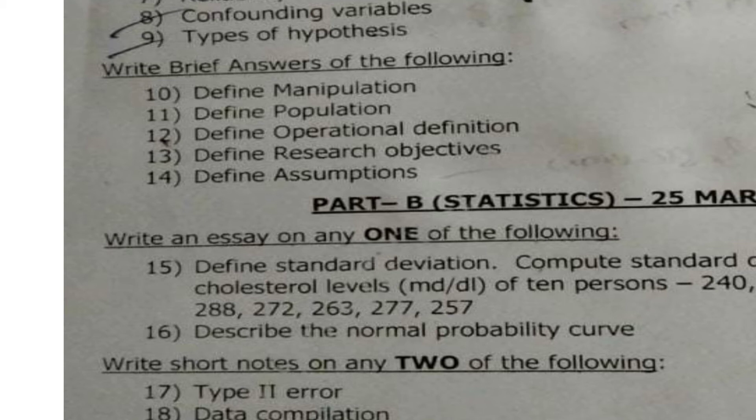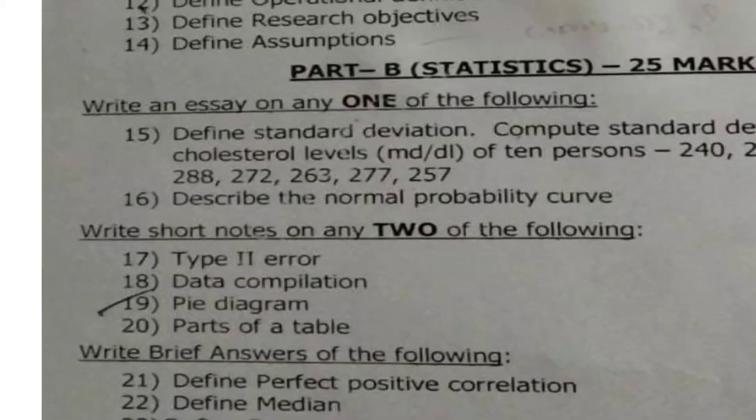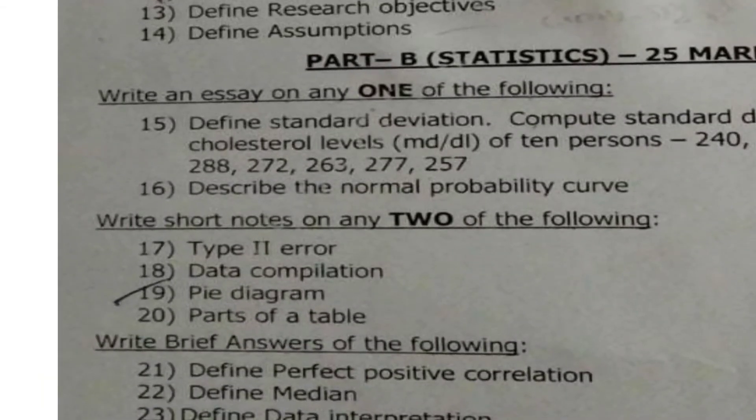In nursing research, the essay section is 20 marks, short notes is 20 marks, and brief answers is 10 marks — totalling 50 marks. Next is Part B, statistics, which is for 25 marks.